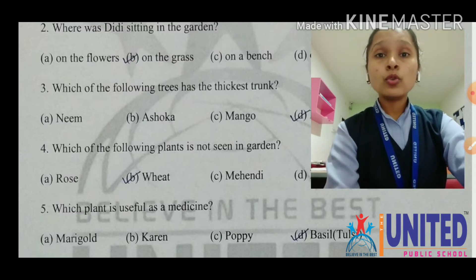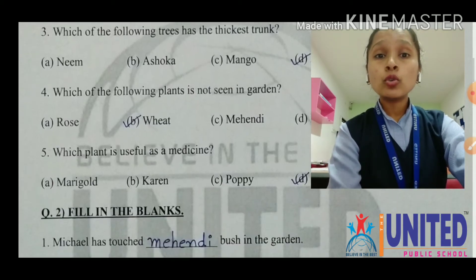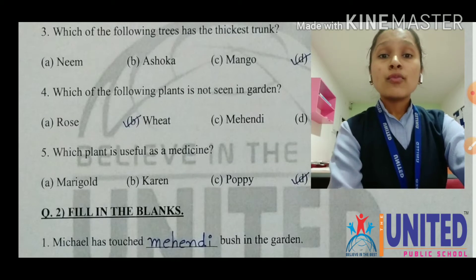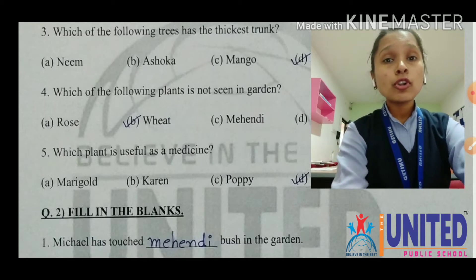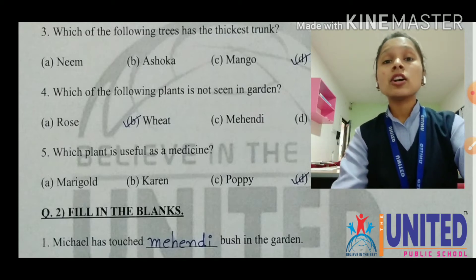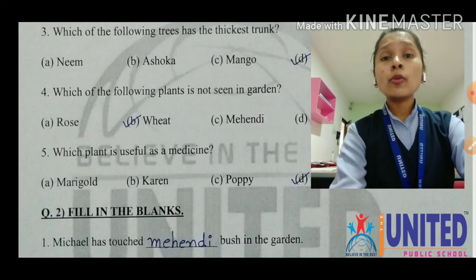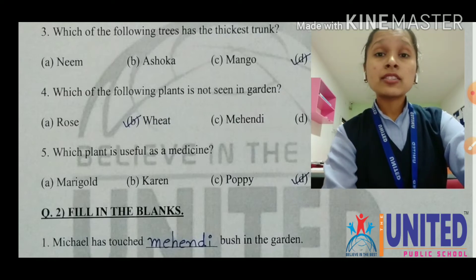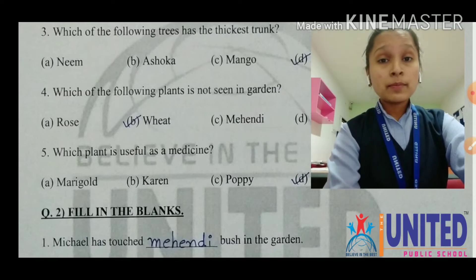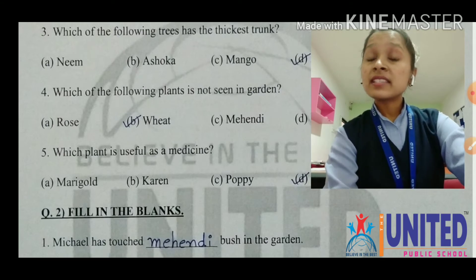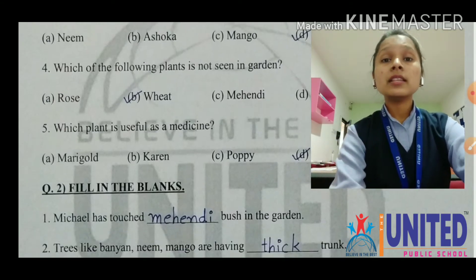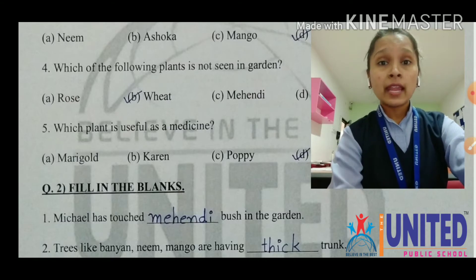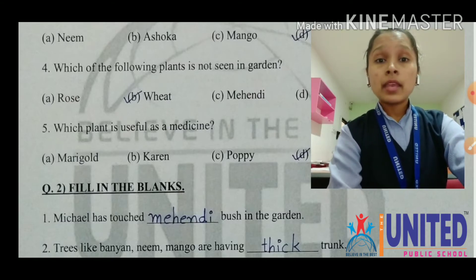Now we move to question number two: fill in the blanks. Number one: Michael has touched dash bush in the garden. Amu has touched the marigold plant, Shabnam has touched the jasmine plant, and Michael has touched the mehendi bush. So the answer is M-E-H-E-N-D-I, mehendi.